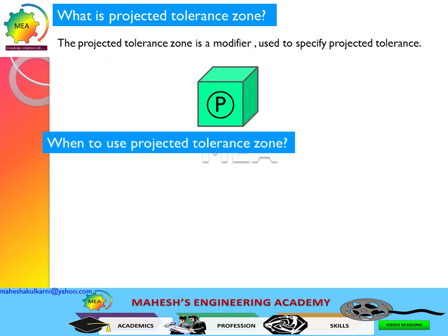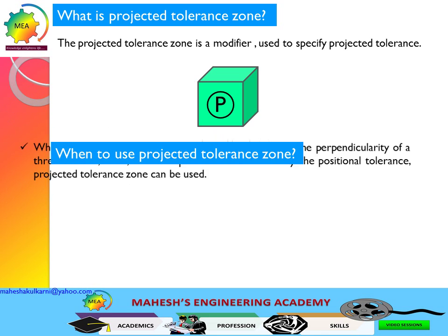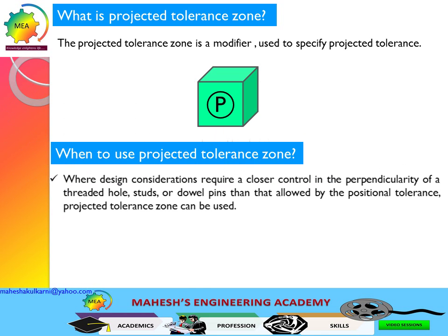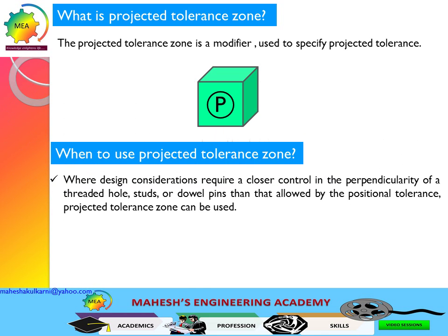When to use a projected tolerance zone? When the design consideration requires closer control in perpendicularity of a threaded hole, studs, dowel pins, or a bush — beyond what is allowed by a position tolerance — a projected tolerance zone can be used.